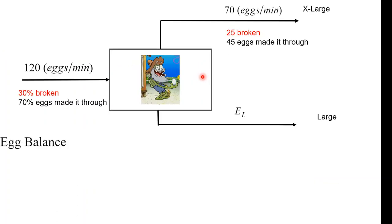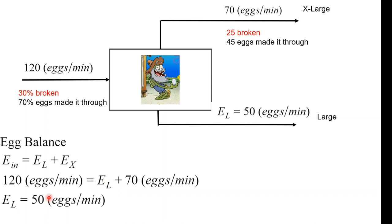So we're gonna do an egg balance. The overall egg balance is gonna be in equals out. It's gonna be the eggs that are coming in plus the summation of whatever's going out, which is really 120 eggs going in, set that equal to 70 coming out plus this unknown variable. Look, we can easily solve for this unknown variable. It's gonna be 50.